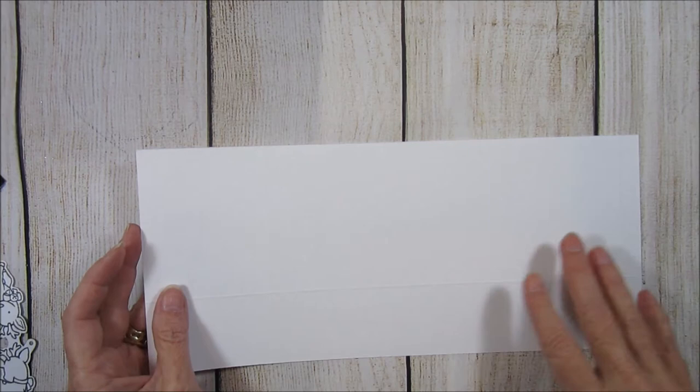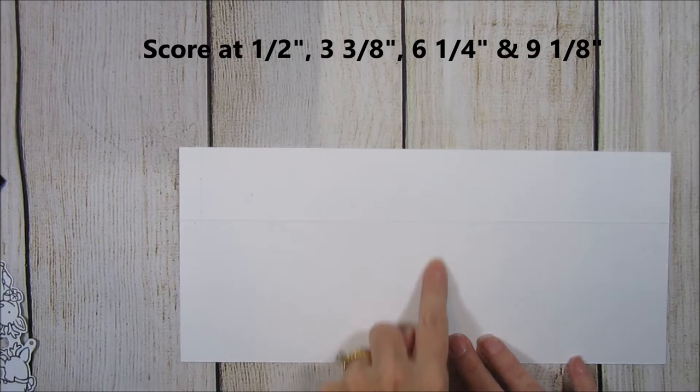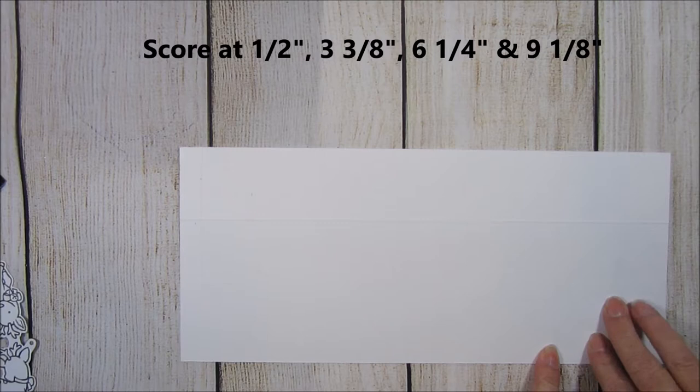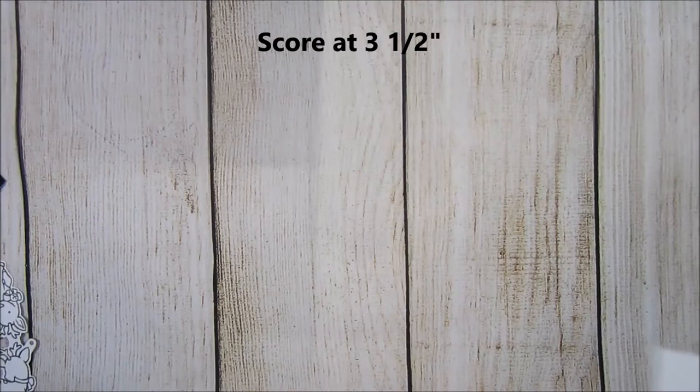You're going to score it at a half inch, 3 and 3 eighths inches, 6 and a quarter inches, and 9 and one eighth inches. You're then going to turn it sideways and you're going to score at 3 and a half inches.